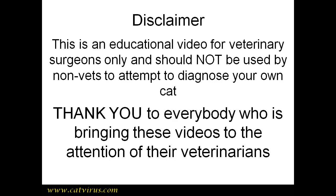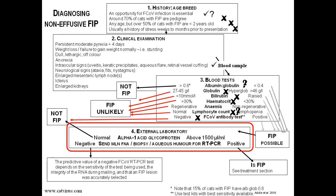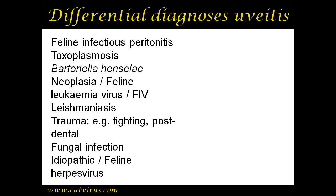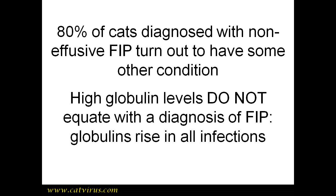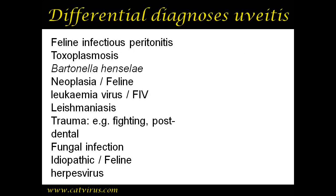We got to the end of step three of the FIP diagnostic algorithm with only one definite tick and one tentative tick in the three steps, although step two was incomplete. We're attempting to rule FIP in or out of our list of differential diagnoses, and the overall appearance is that FIP is extremely unlikely. This is not unusual - a student telephone survey of vets who had requested FIP profiles at our diagnostic laboratory at Glasgow Veterinary School found that at least 80 percent of cats suspected of suffering from non-effusive FIP turned out to have some other condition.